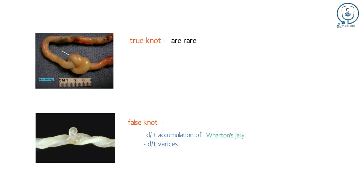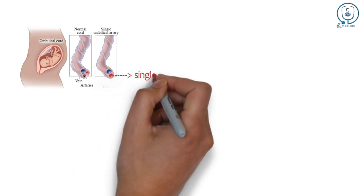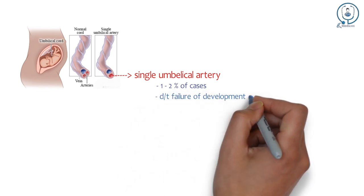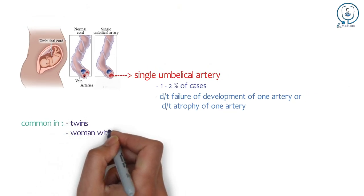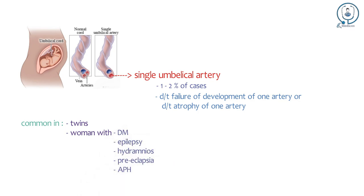Normally, there are two umbilical arteries but single umbilical artery is present in about 1 to 2% of cases. It may be due to failure of development of one artery or due to atrophy of the other. It is more common in twins and in babies born of women with diabetes, epilepsy, hydramnios, preeclampsia and antepartum hemorrhage.